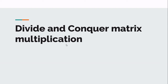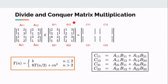Conventional matrix multiplication has a complexity of O(N³). In the divide and conquer strategy, we divide the matrix multiplication into several subproblems. The smallest subproblem is a 2x2 matrix, because the smallest matrix multiplication happens between two 2x2 matrices.